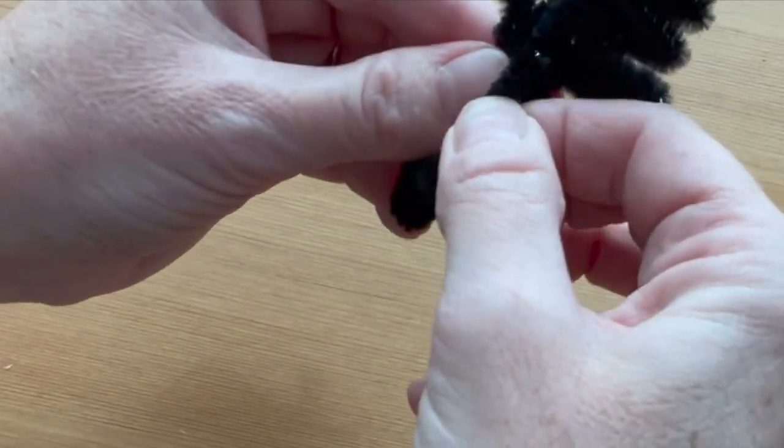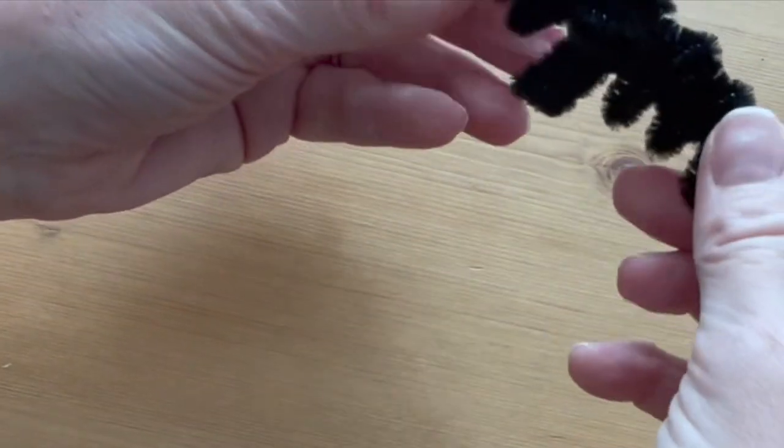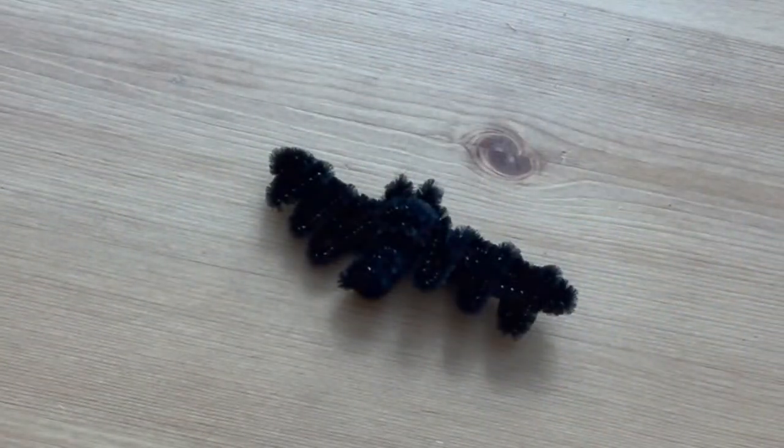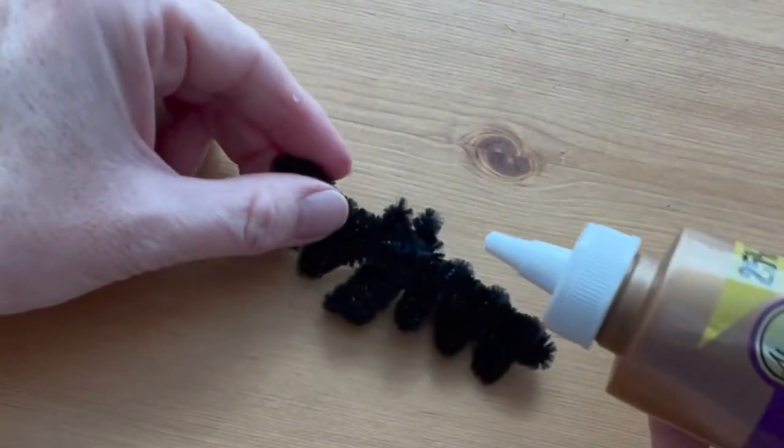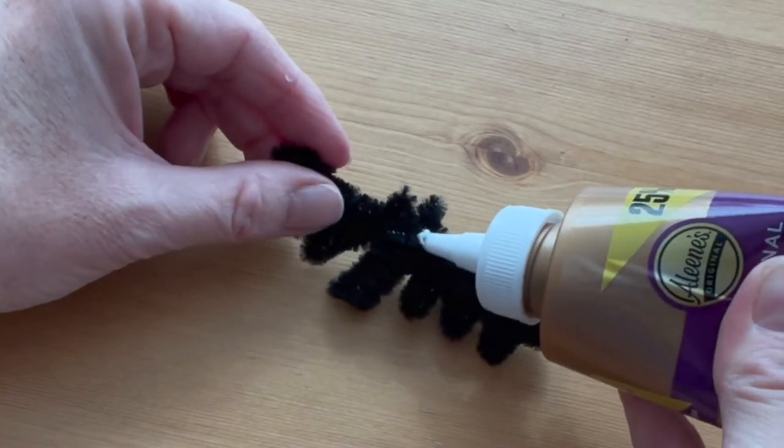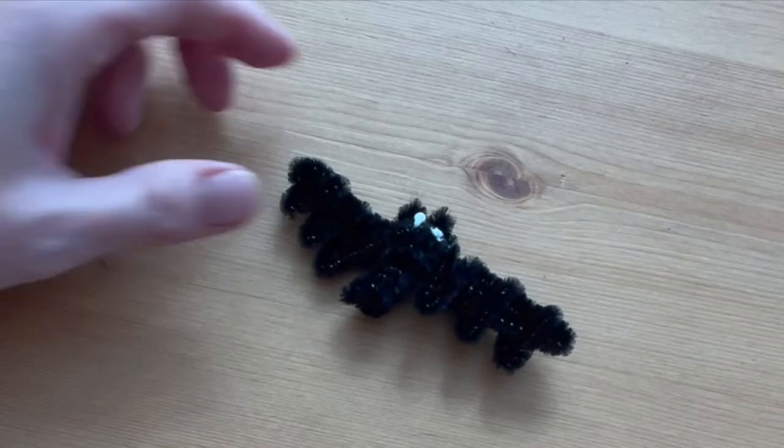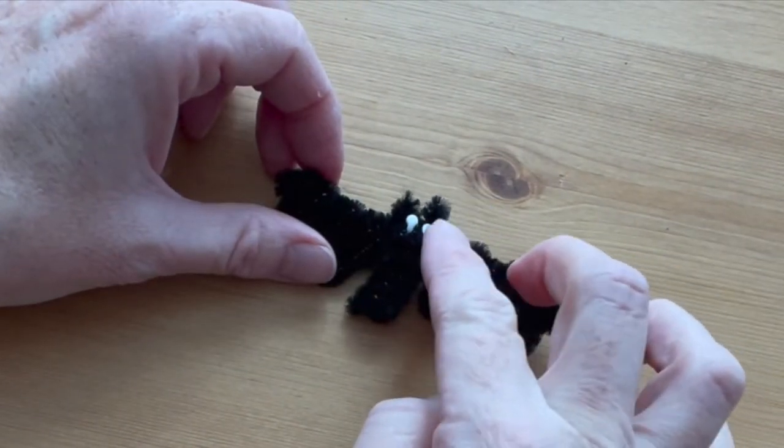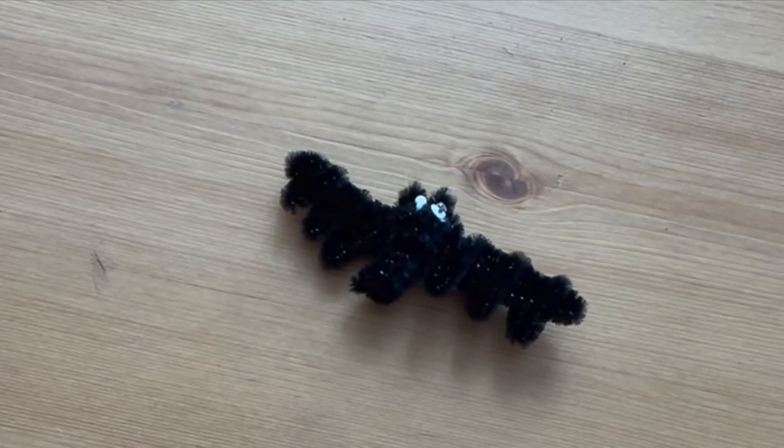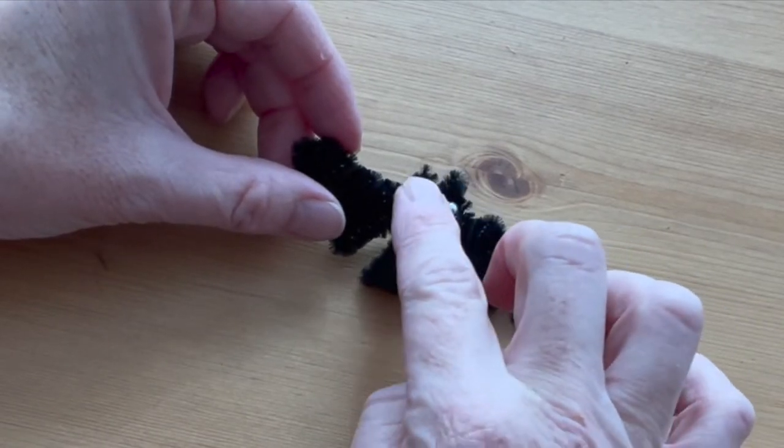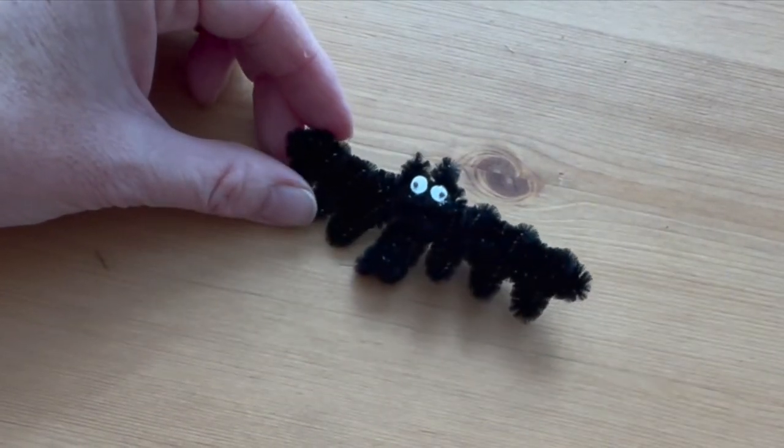The last step is to use thick white craft glue and glue on your googly eyes. When the glue is dry, your bat is finished.